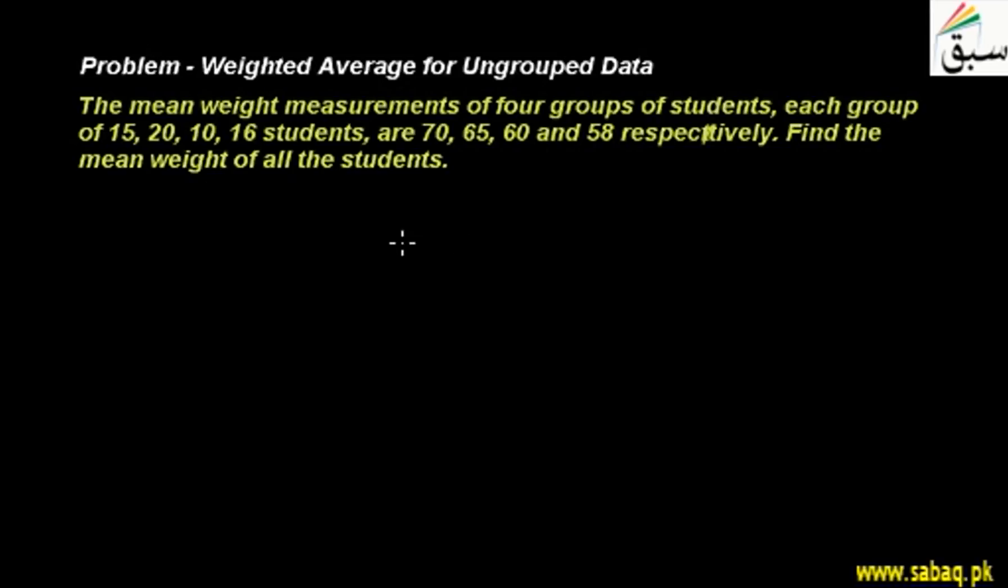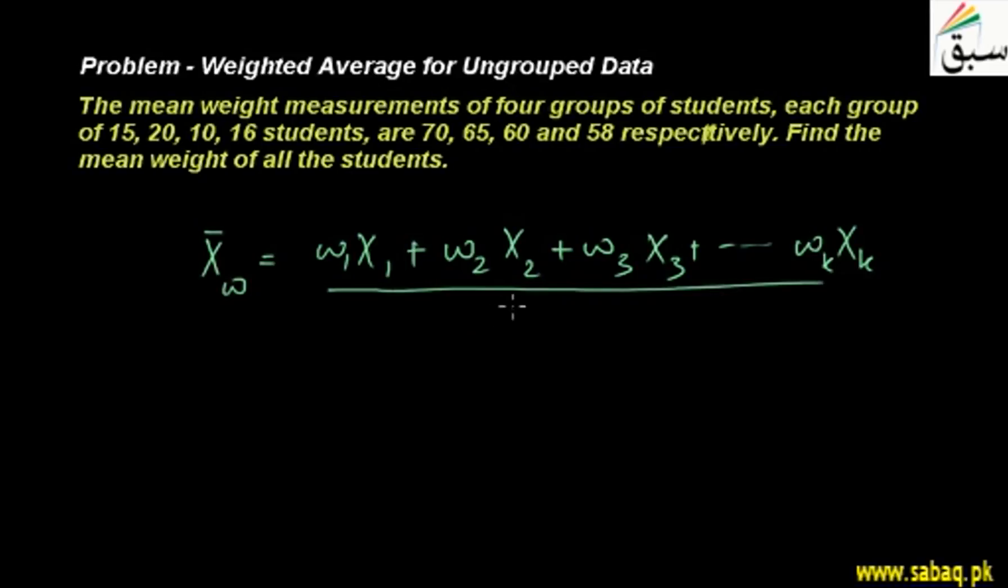Now, what is weighted average? We will write weighted average. This is x bar w equals w1 times x1 plus w2 times x2 plus w3 times x3 and plus up to wk times xk divided by w1 plus w2 plus w3 and up to wk.